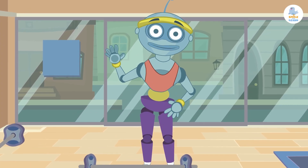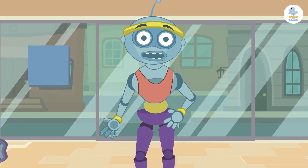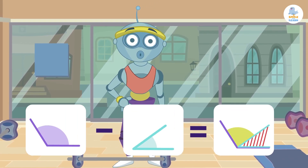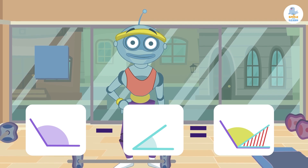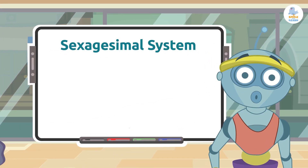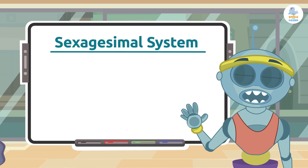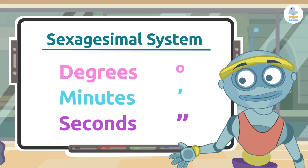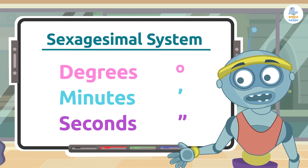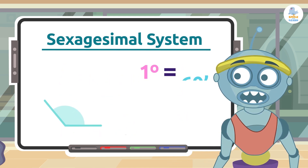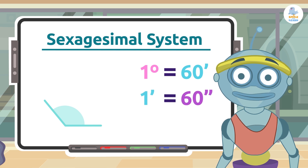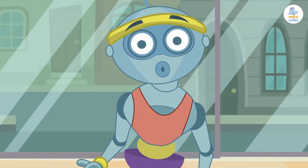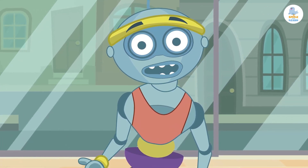The previous lesson we learned how to add angles, and today we're going to learn how to subtract them. Are you ready? As you know, we use the sexagesimal system to measure angles — they are measured in degrees, minutes, and seconds. Remember that one degree equals 60 minutes and one minute equals 60 seconds. Today we'll learn how to subtract angles, and with some examples you'll see how easy it is.